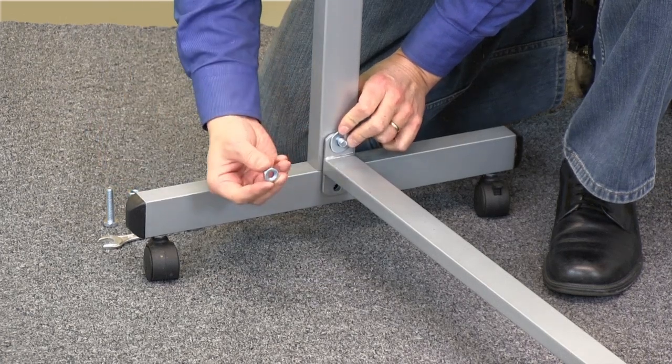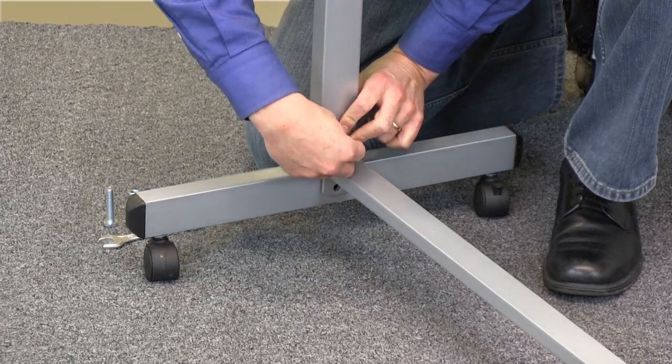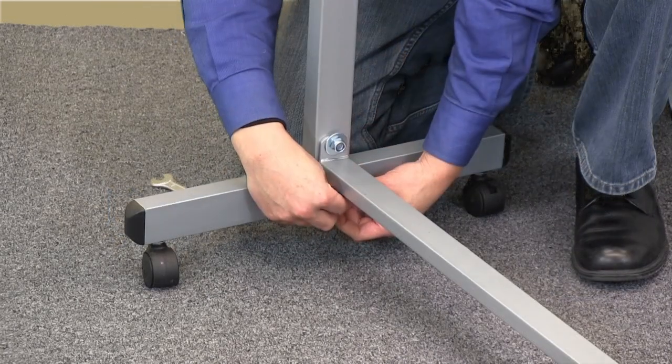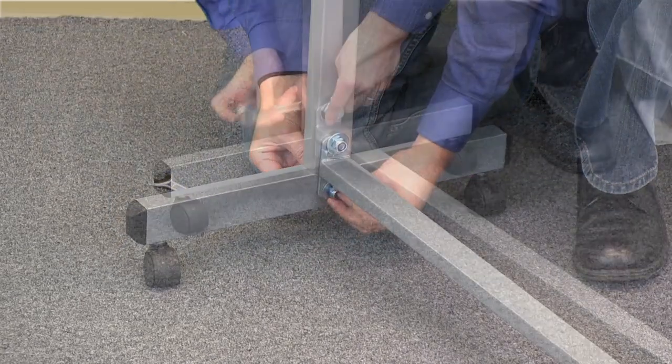Line up the bottom support by passing the bolt through. Once you have the parts lined up, take one of the large washers and locking nut and secure it in place.